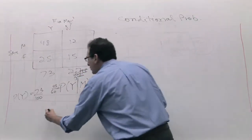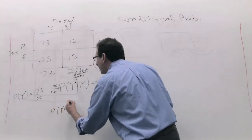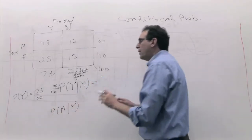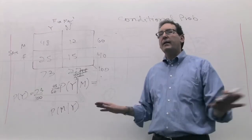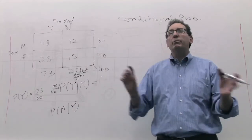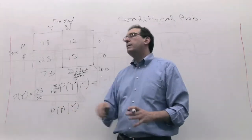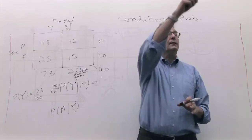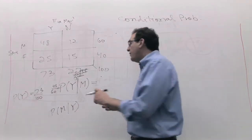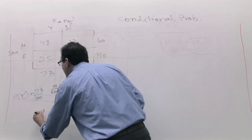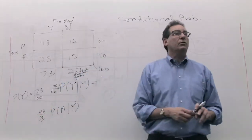Let's take one more. What's the chance somebody is a male, given that they're a finance major? We know for a fact this person is definitely a finance major — that's 100% sure. What is the chance that person happens to be male? The answer is still 48, but now we're talking about the 73 people who are definitely finance majors, so it's 48 out of 73.